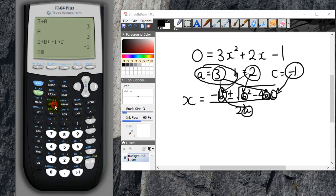If you press b, alpha b, you should get 2, and if you press alpha c, you should get negative 1. So a, b, and c are all stored into these variable names.